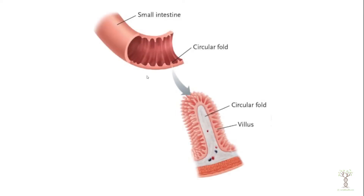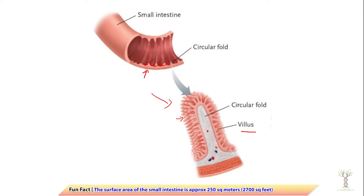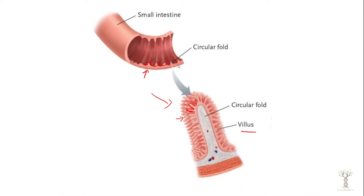If we look at a section of the small intestine, we can see that it has a lot of folds, and each of these folds is called a villus — villi is plural, villus is singular. Each villus also has microvilli. There is a lot of surface area so that when we are breaking down and digesting our food chemically and mechanically, there is a lot of surface area for absorption to occur.